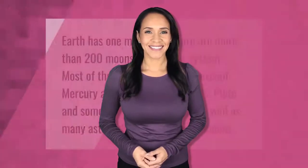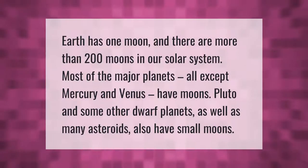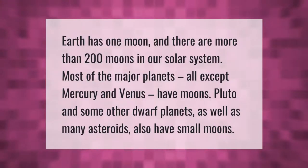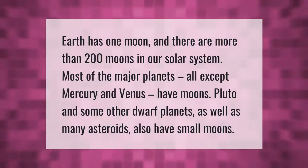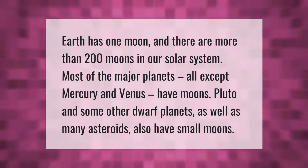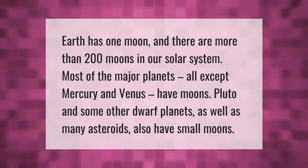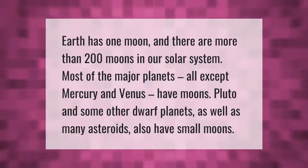Earth has one moon, and there are more than 200 moons in our solar system. Most of the major planets — all except Mercury and Venus — have moons. Pluto and some other dwarf planets, as well as many asteroids, also have small moons.